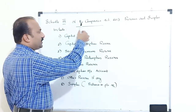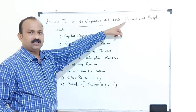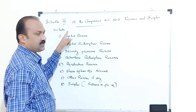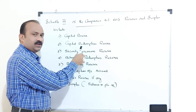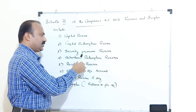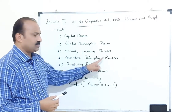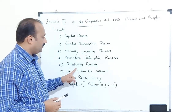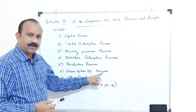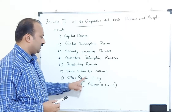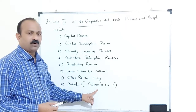Schedule 3 of the Companies Act 2013 prescribes that reserves and surplus include: capital reserve, capital redemption reserve, security premium reserve, debenture redemption reserve, revaluation reserves, share option outstanding account, other reserves if any, and surplus — that is, the balance in the profit and loss account. These are the main reserves under the heading reserves and surplus in the balance sheet of the company.